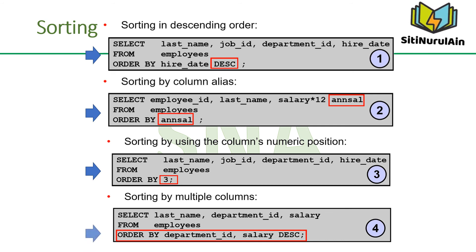In example 4, you can sort query results by more than one column. The sort limit is the number of columns in the given table. In the ORDER BY clause, specify the columns and separate the column names using commas. If you want to reverse the order of a column, specify DESC after its name.